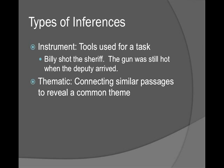Another type is an instrumental inference — inferences about actions or tools. For example: 'Billy shot the sheriff. The gun was still hot.' I don't have to say 'he shot the sheriff with a gun' — we understand that guns are things that do shooting. That makes it a tool or action inference.